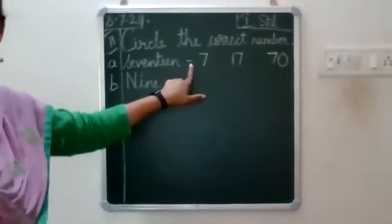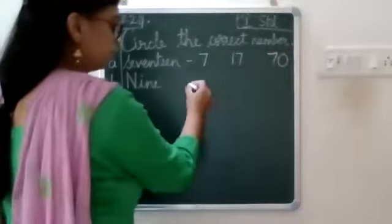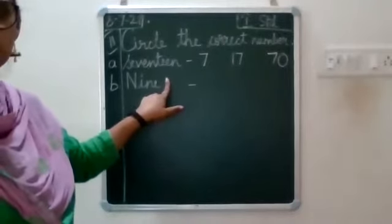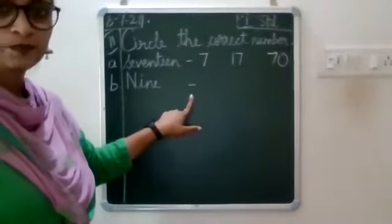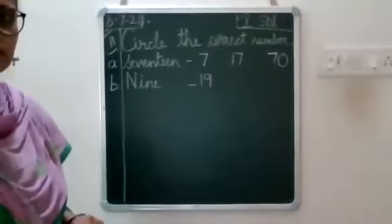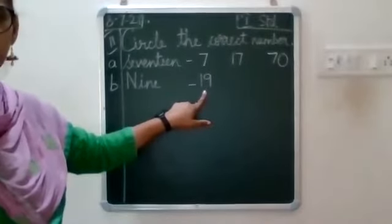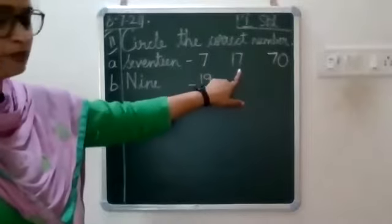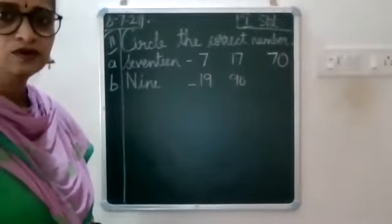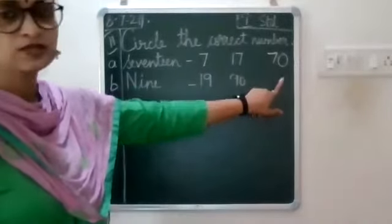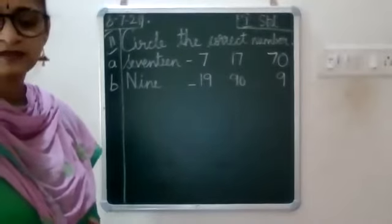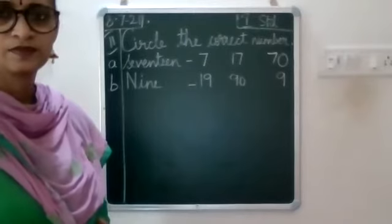Now you put a dash here — the first one next to 17. Same thing over here: put a dash in the same line, below that dash put a dash. Where you have written 7, below that write the number 19. Below the number where you have written 17, write 90. And below that write the number 9.